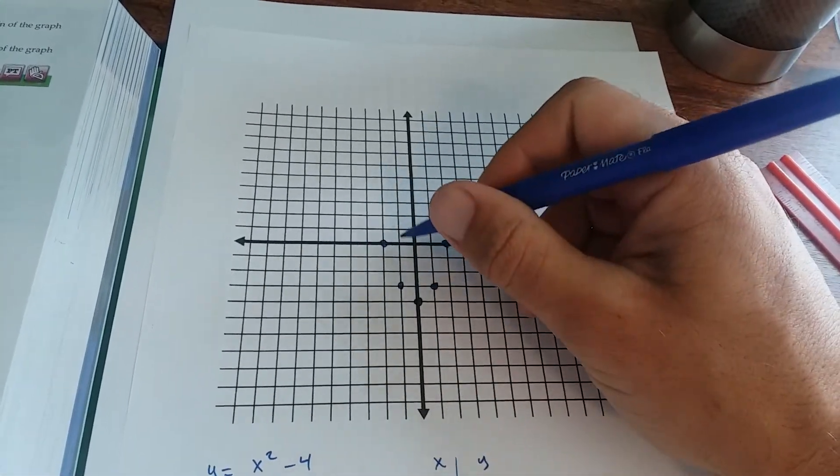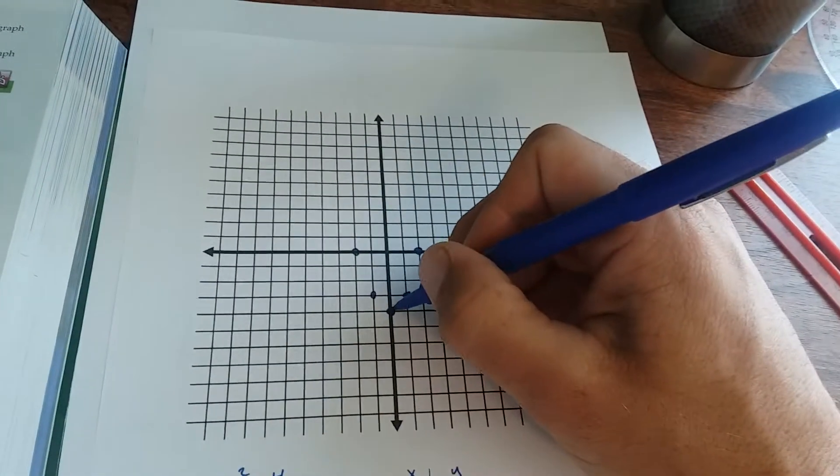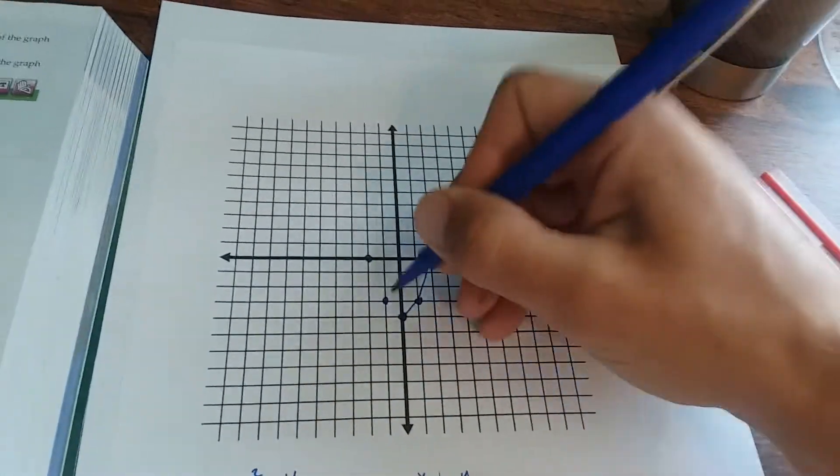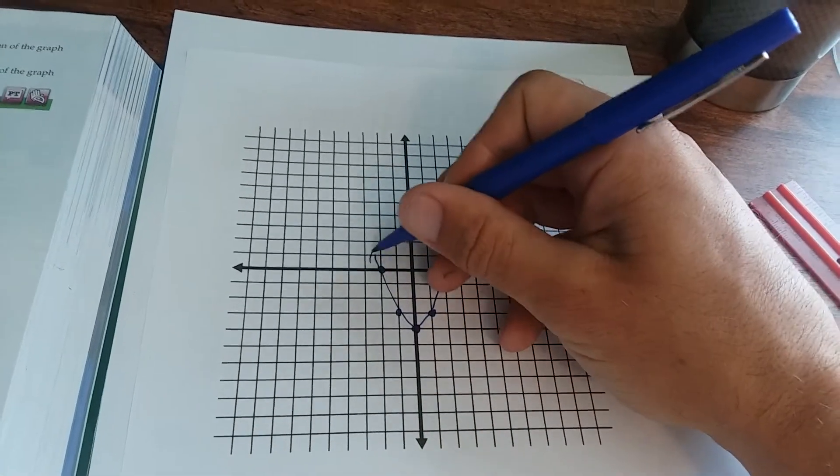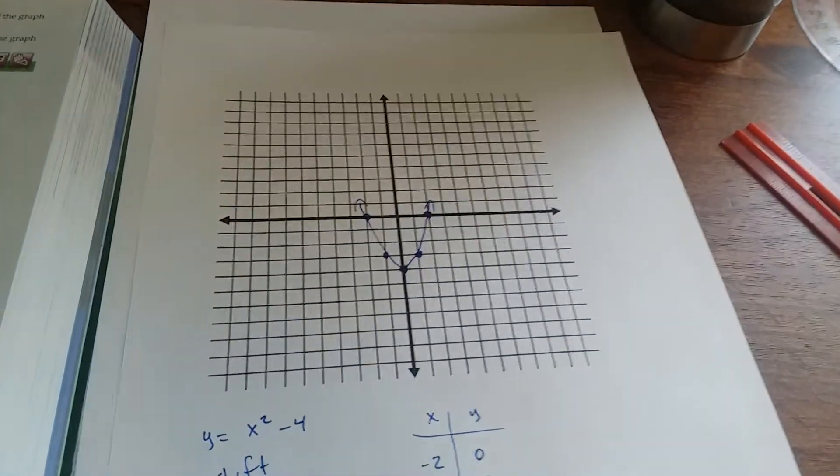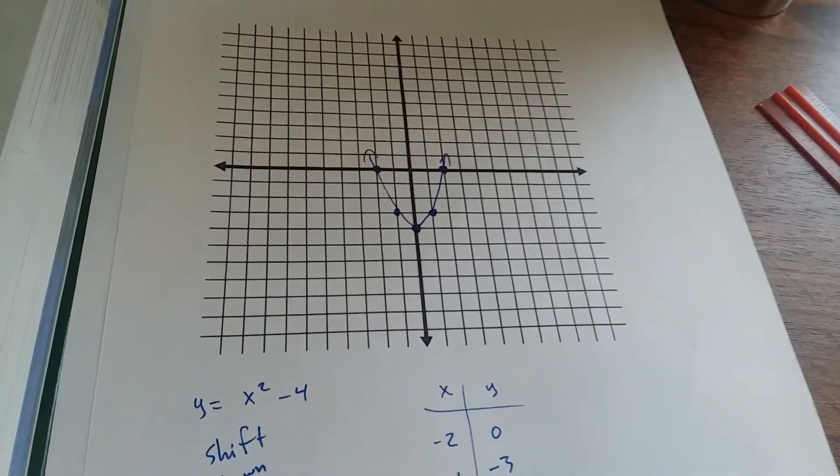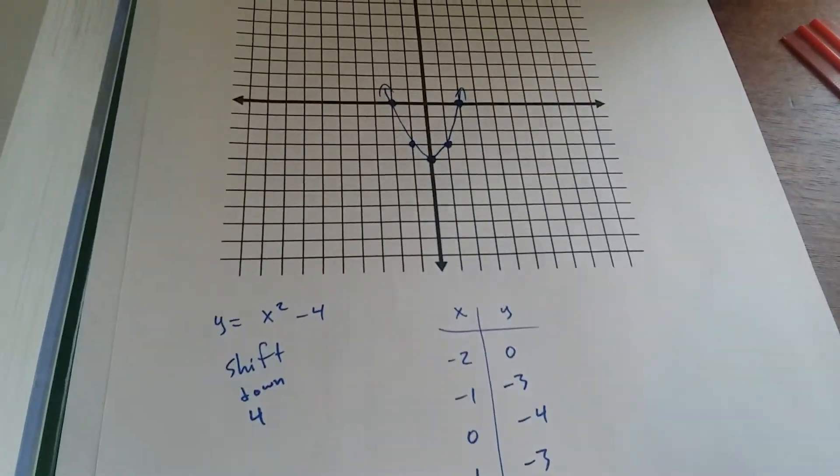Notice that it's kind of a U shape. So what we have is a parabola. Like so. The parent graph would have been Y equals X squared here. So it's a shift down 4 and there's your graph.